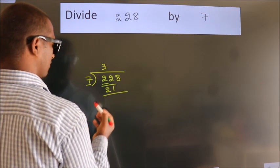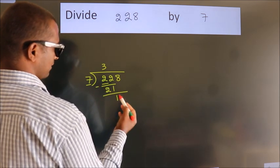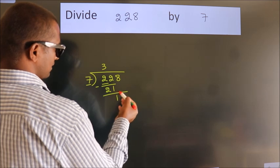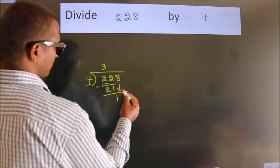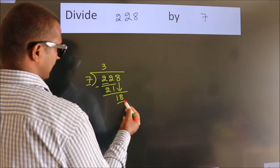Now we should subtract. We get 1. After this, bring down the beside number. So 8 down. So 18.